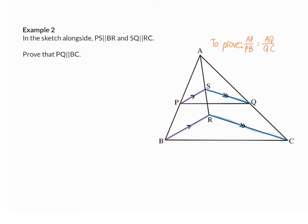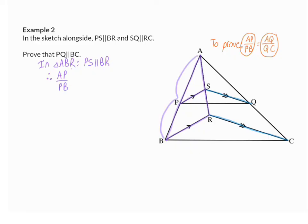To be able to prove this, we are going to work with the left-hand side and the right-hand side on their own. So I'm going to start off with the left-hand side, and that means I will work in triangle ABR. In this triangle ABR, we already know that PS is parallel to BR, and therefore we can say that AP over PB will be in the same ratio as AS over SR. My reason: line parallel to one side of the triangle.